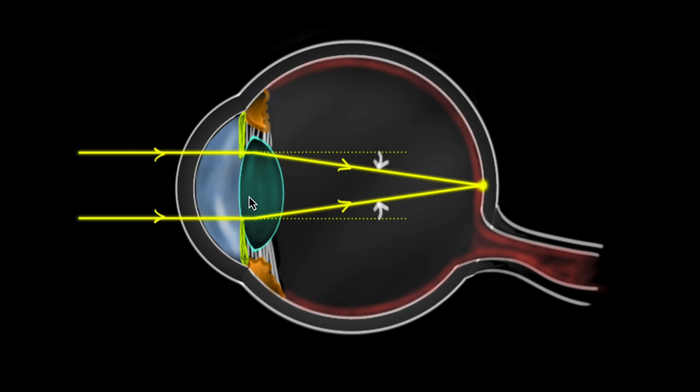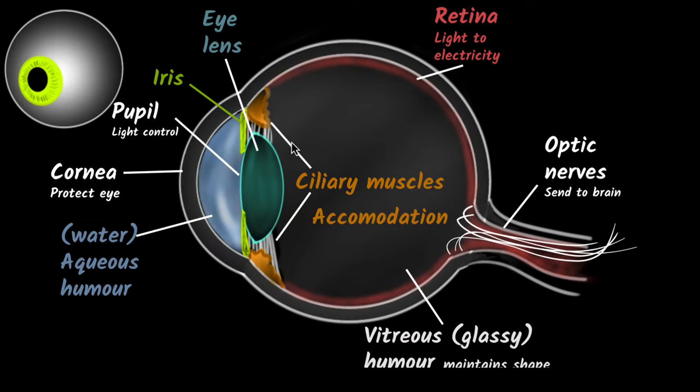And similarly, when you need low power, they will relax. The ciliary muscles will relax, and then this particular lens will become thinner, and the power will decrease. This is basically what we call accommodation, and this is the reason why we have the ciliary muscles.